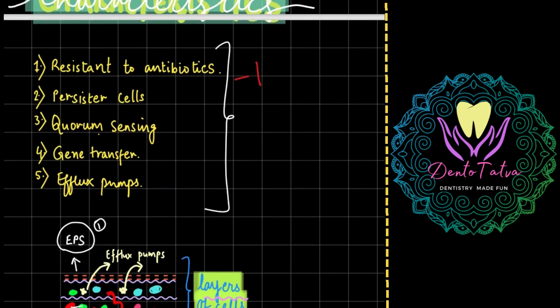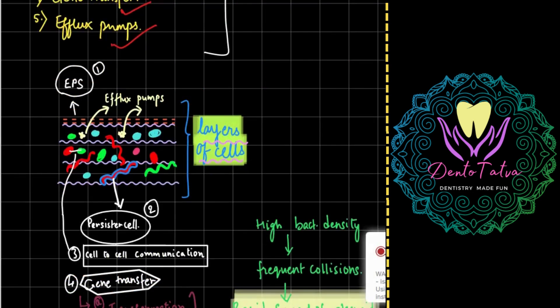Characteristic features will be resistant to antibiotics because of the so-called EPS and the 300-layered cell structure is going to make this entire structure extremely resistant to antibiotics. Persister cells are there which are in the deepmost or the innermost layers and they are somewhat dormant. There is quorum sensing, that is bacterial cell to bacterial cell communication, there is genetic transfer and phenotypic shifting, and there are efflux pumps.